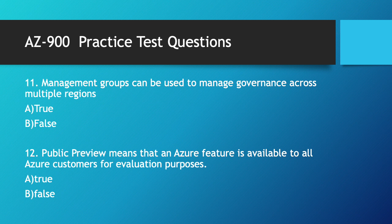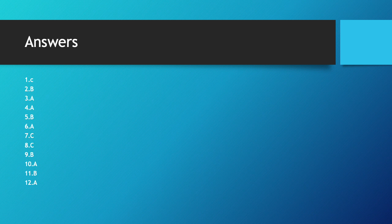Next question: public preview means that an Azure feature is available to all Azure customers for evaluation purposes — that is correct, so the answer is A. There are two types of previews: private preview and public preview. Private preview allows only some customers to evaluate Azure services. You can find all the answers here. Thanks for watching. If you like this video, please subscribe and share. Thank you.